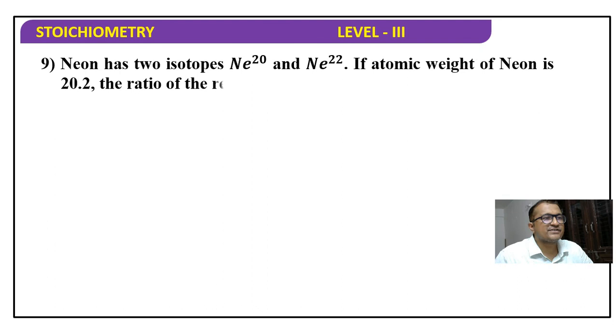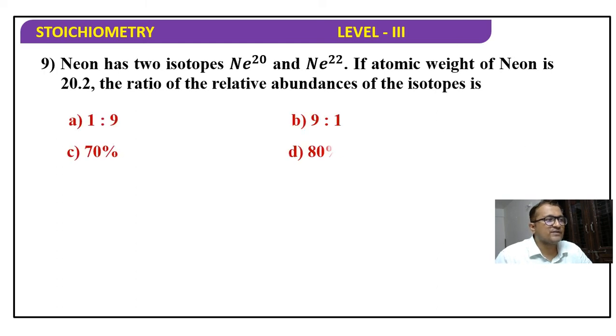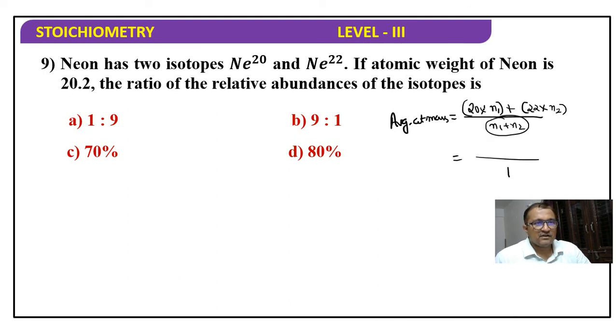Next question: Neon has two isotopes Ne-20 and Ne-22. If the atomic weight of Neon is 20.2, then what is the ratio of the relative abundance of isotopes? Options are 1 is to 9, 9 is to 1, 70 percent, 80 percent. So generally when we calculate average atomic mass, isotope number 1, this is isotope number 2, and the sum will be N1 plus N2.